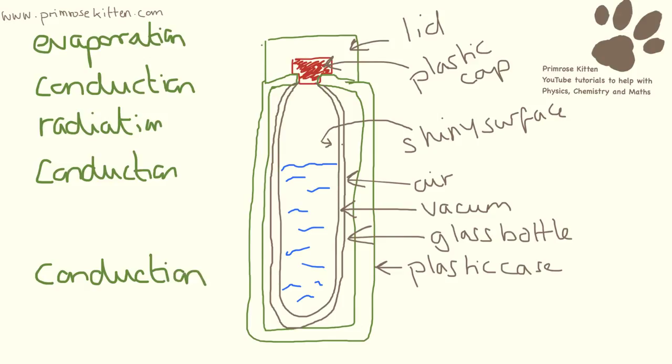Now what we have done there is we have broken the question down into different parts: the lid, the plastic cap, the shiny surface, the air in the vacuum, the glass bottle, and the plastic case. We have worked out which type of energy transfer would be corresponding to each of these, and now all we need to do is just turn this into a six-mark answer.